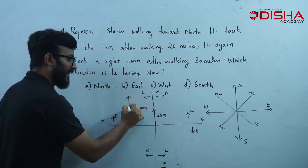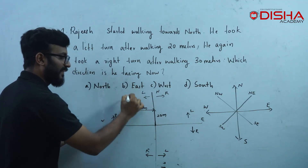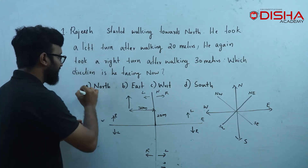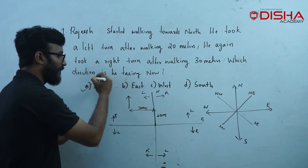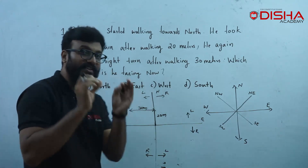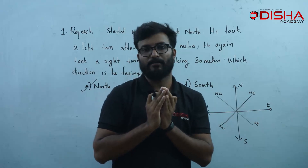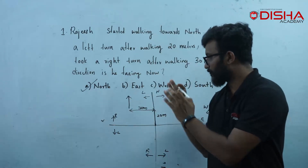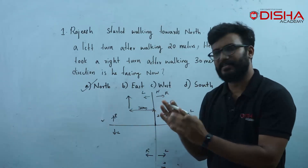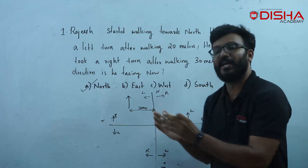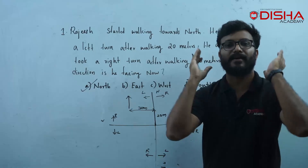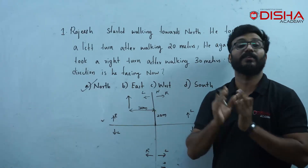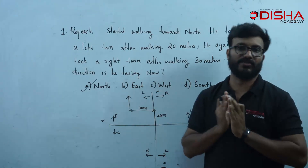If Rajesh is facing north, we will simply identify this question using the same direction on the rough structure. We will answer this question.